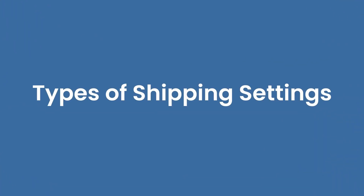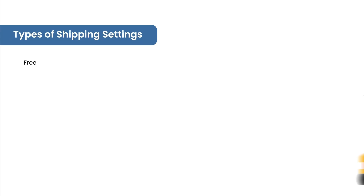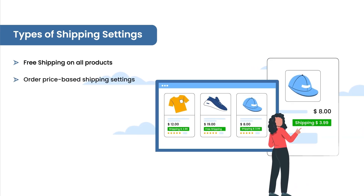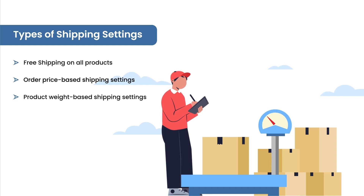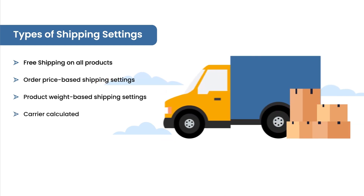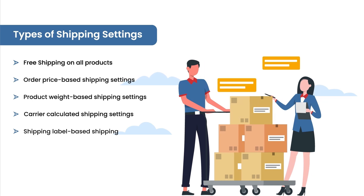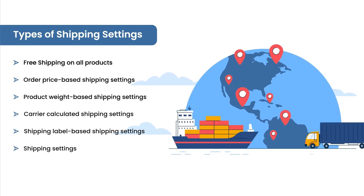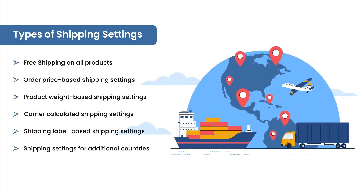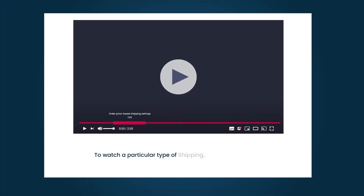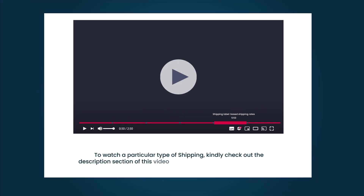In this video, we will cover the following types of shipping settings: free shipping on all products, price based shipping settings, product weight based shipping settings, carrier calculated shipping settings, shipping label based shipping settings, and shipping settings for additional countries. To watch a particular type of shipping, kindly check out the description section of this video which has the timestamp mentioned.